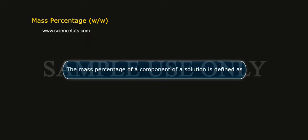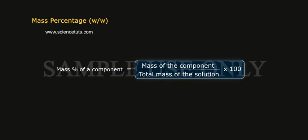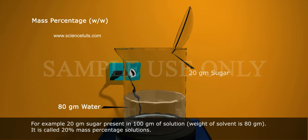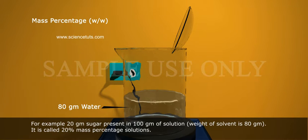Mass Percentage (W/W): The mass percentage of a component of a solution is defined as: Mass percent of a component is equal to mass of the component divided by total mass of the solution, multiplied by 100. For example, 20 grams of sugar present in 100 grams of solution means the weight of solvent is 80 grams. It is called a 20% mass percentage solution.